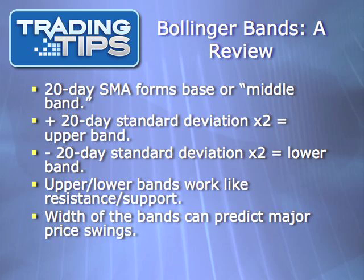Bollinger Bands consist of an upper and lower band that are equidistant from a midpoint, which is the stock's 20-day simple moving average. Sometimes this midpoint is depicted as a middle band, but often it is not. The upper band takes the 20-day SMA and adds the standard deviation times 2, while the lower band subtracts this same value from the 20-day SMA. The result is a measure of past volatility, which can help predict future volatility.